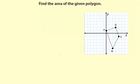Find the area of the given polygon. Now it looks like it might be a trapezoid but we need to verify first. So if we have a trapezoid, AB is going to be parallel to DC. So let's find the slope of each.